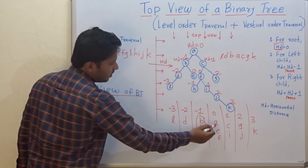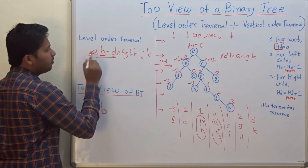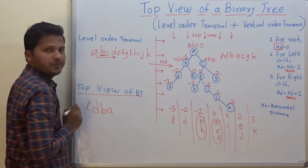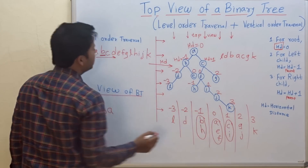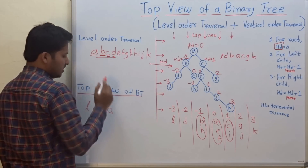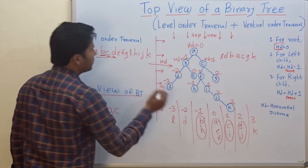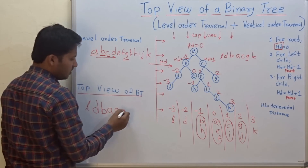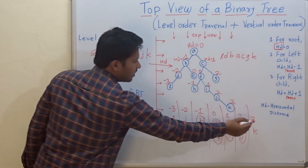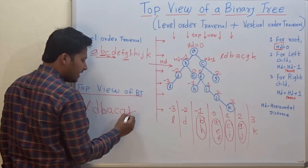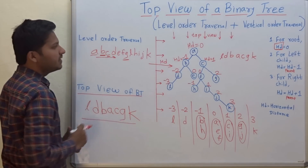For HD 0, there are three nodes: A, E, and F. A appears first in level order, so A comes in the top view. For HD 1, there are nodes C and I — C comes first, so C appears in the top view. For HD 2, out of G and J, G comes first, so G appears in the top view. For HD 3, there is only K, so K directly comes in the top view. This is the top view of this binary tree.